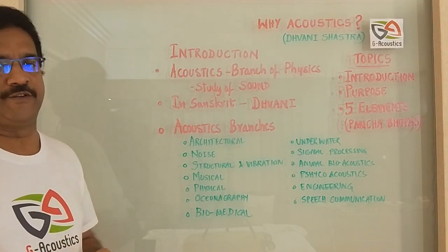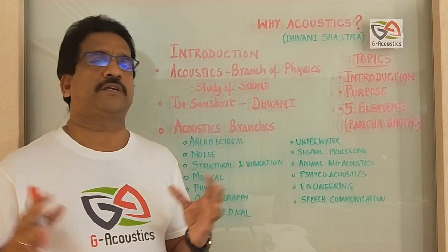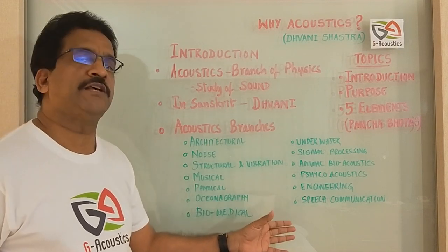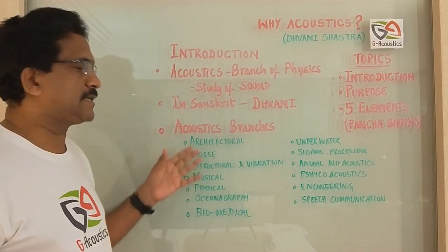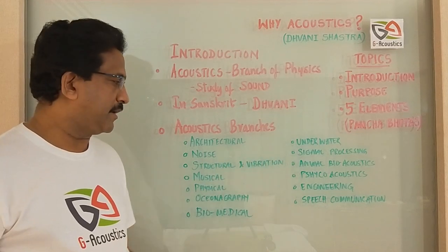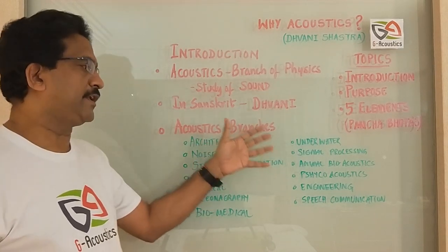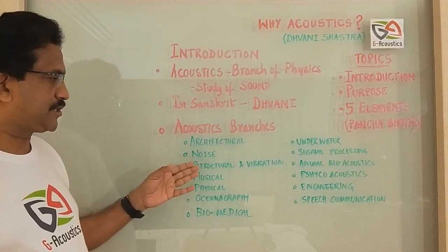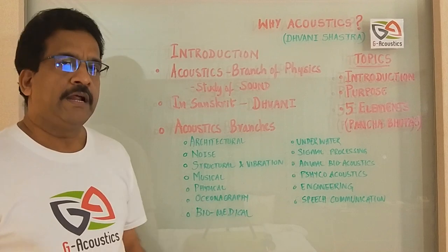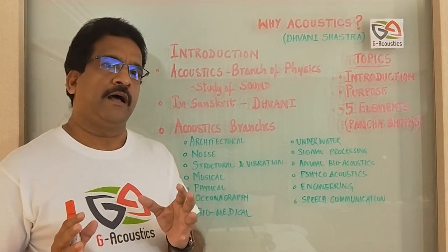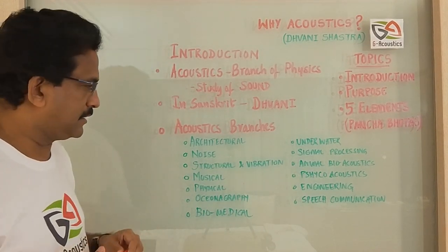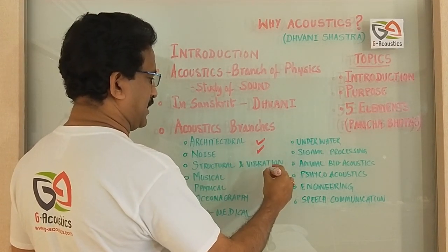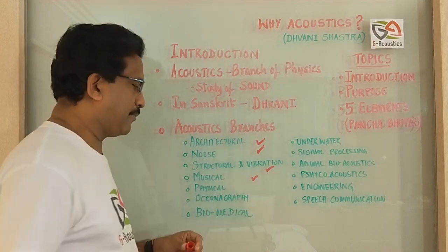Coming to the branches of acoustics — it is a very big subject. There are almost 13 specializations of acoustics as per the Acoustical Society of America, which has defined 13 divisions. These include architectural acoustics, noise, structural and vibration, musical, and more. The scope of topics we will cover in this lecture series are architectural, noise, structural and vibration, and a little bit about musical.